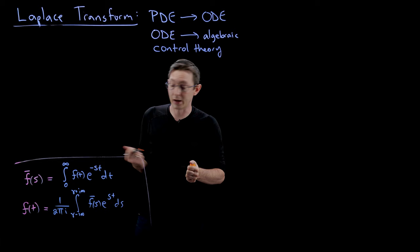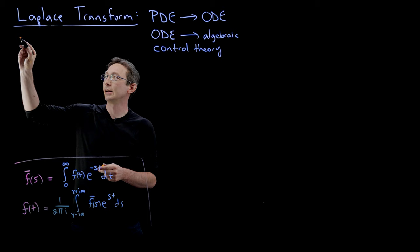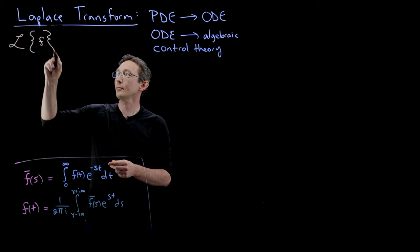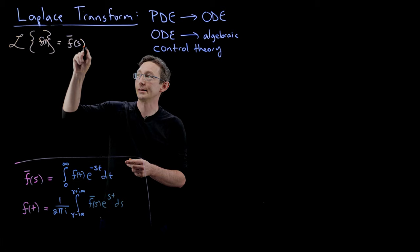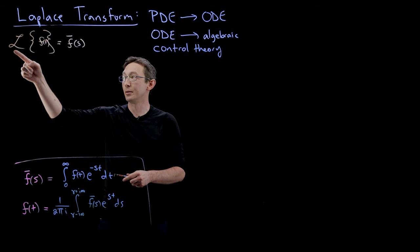Probably the most important thing first: I'm going to denote the Laplace transform as curly L of a function F — let's say F of T — and that is going to equal F-bar of S. That's how I'm going to denote this: F-bar of S is the Laplace transform of some function of T.